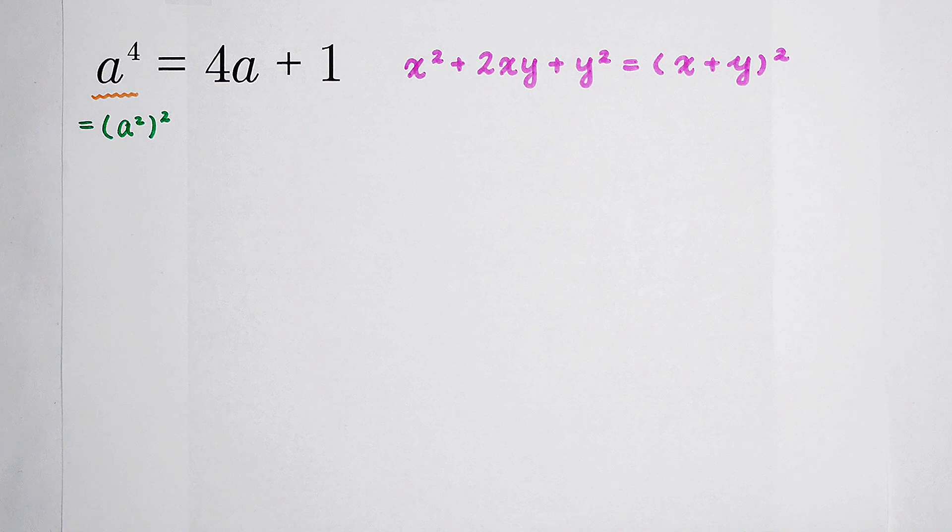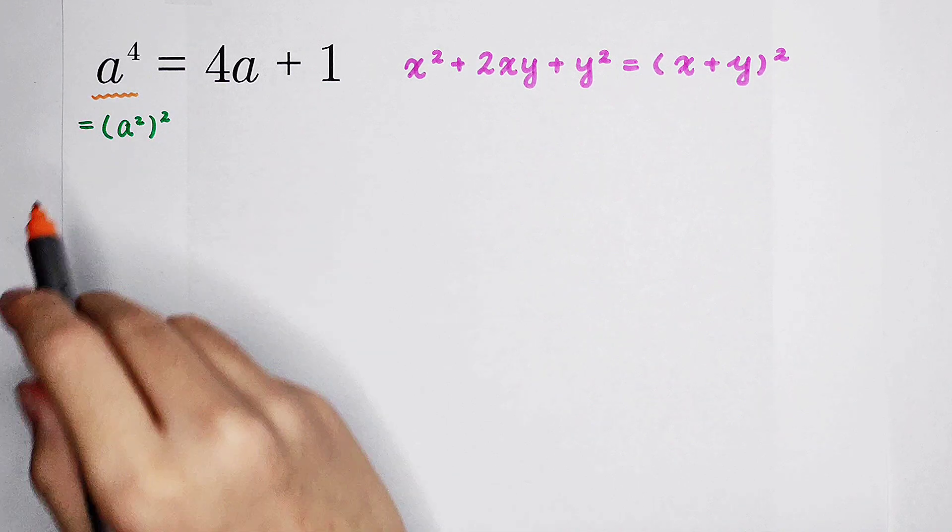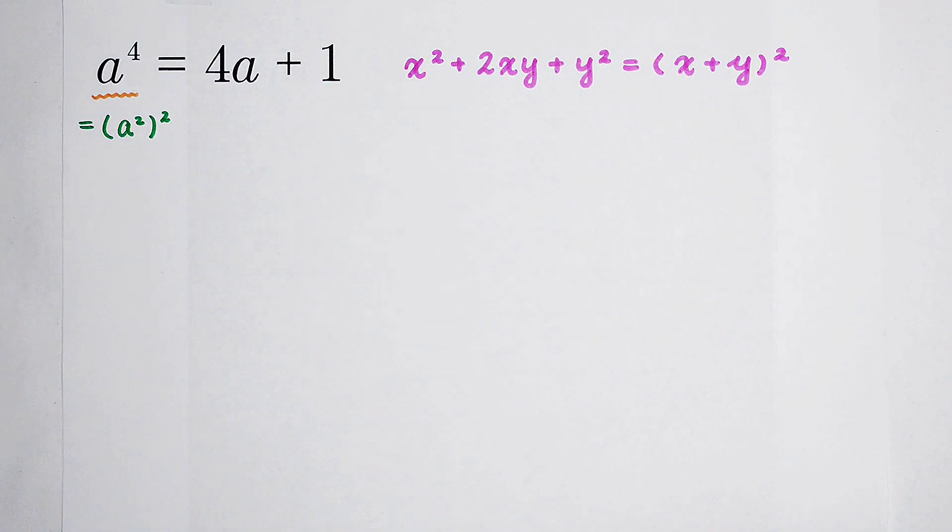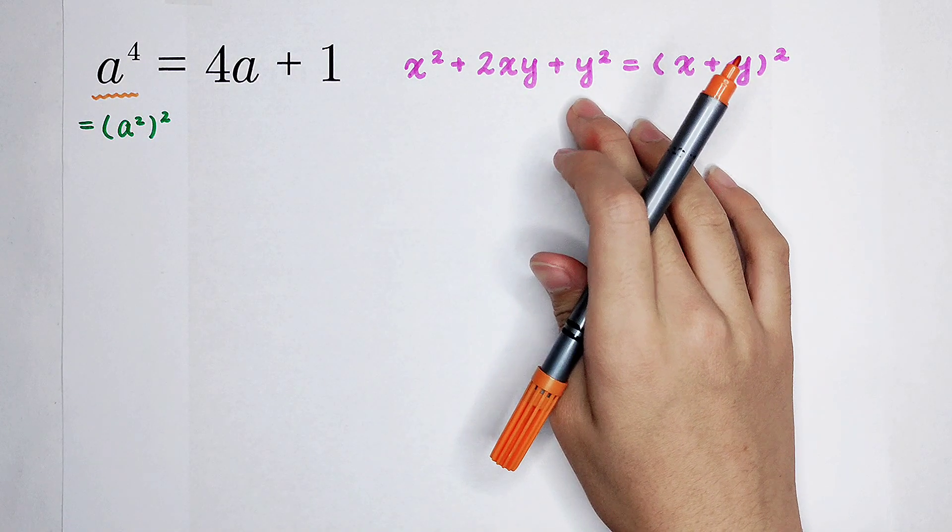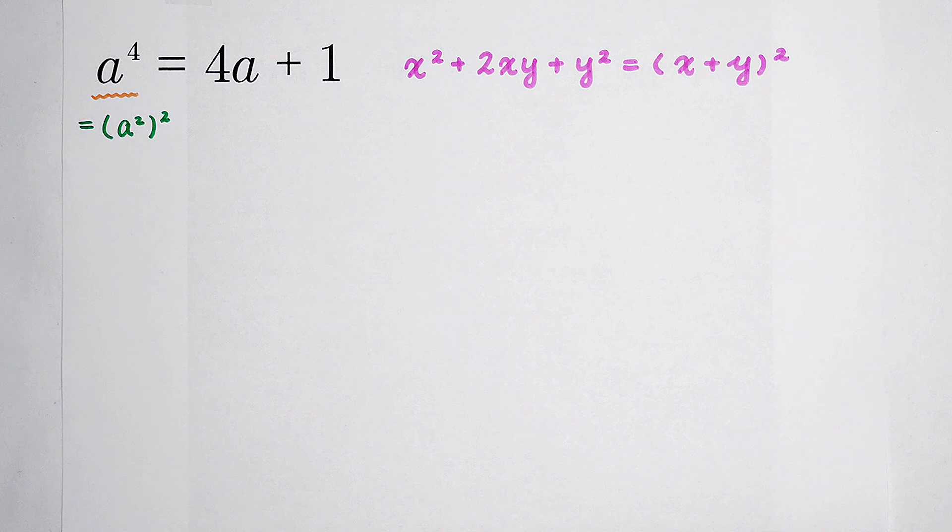This a to the power of 4 can be regarded as a squared and then all squared. So now, x is a squared. What about y? I can find a very nice number that is 1.